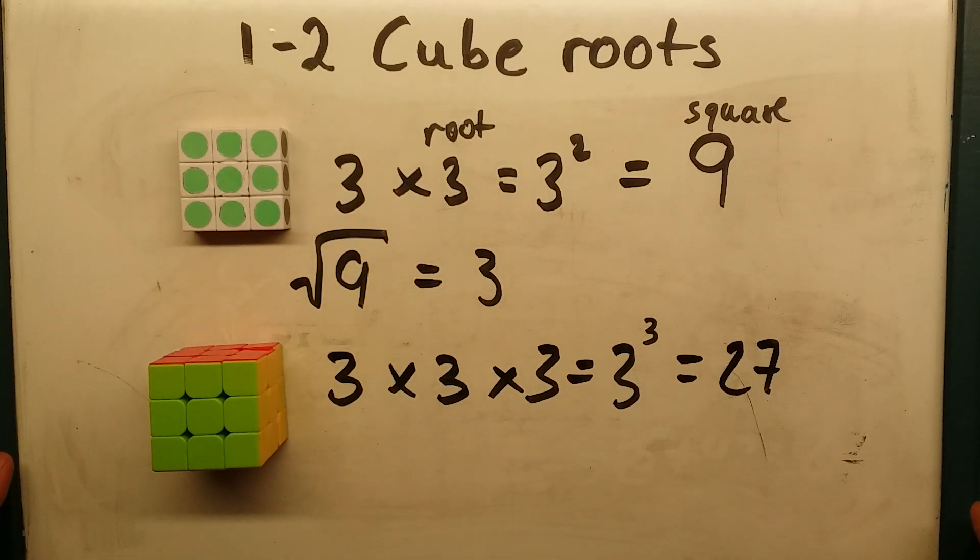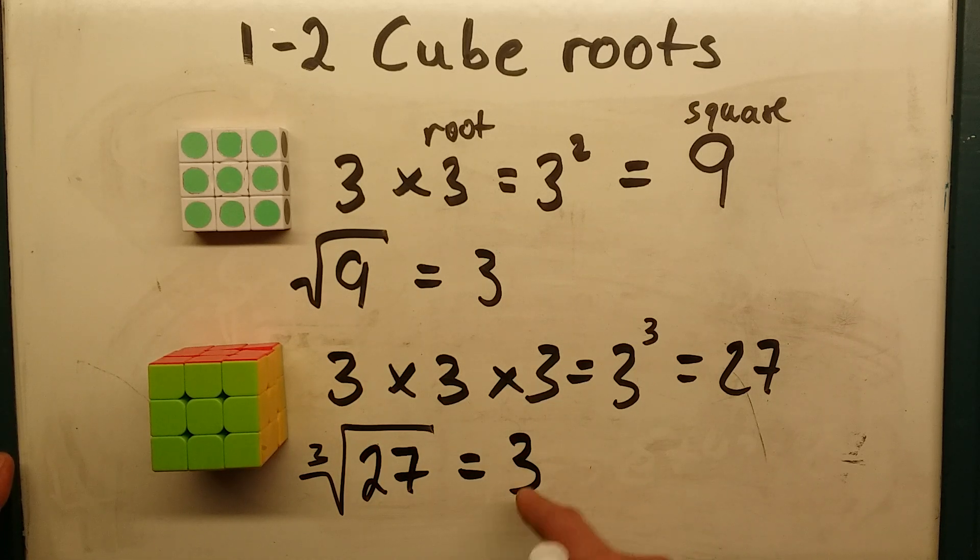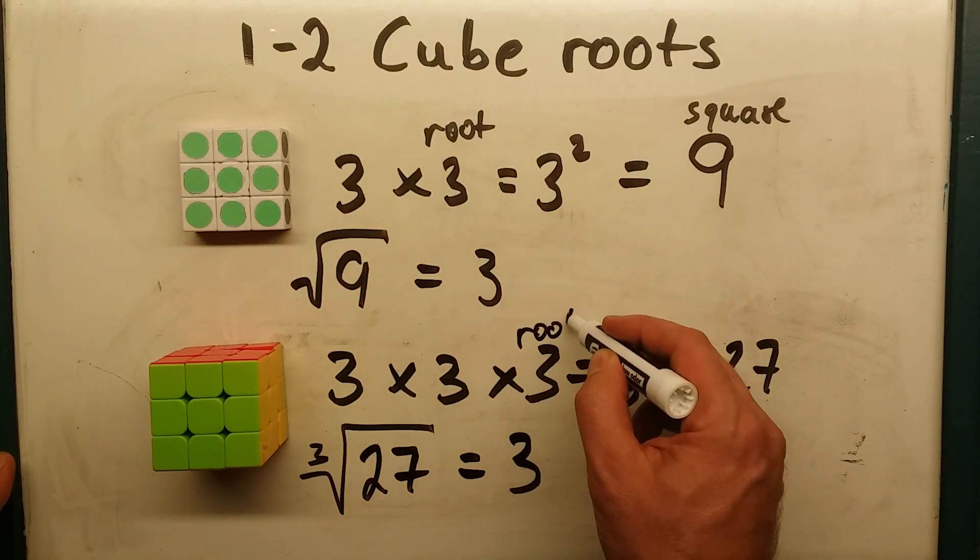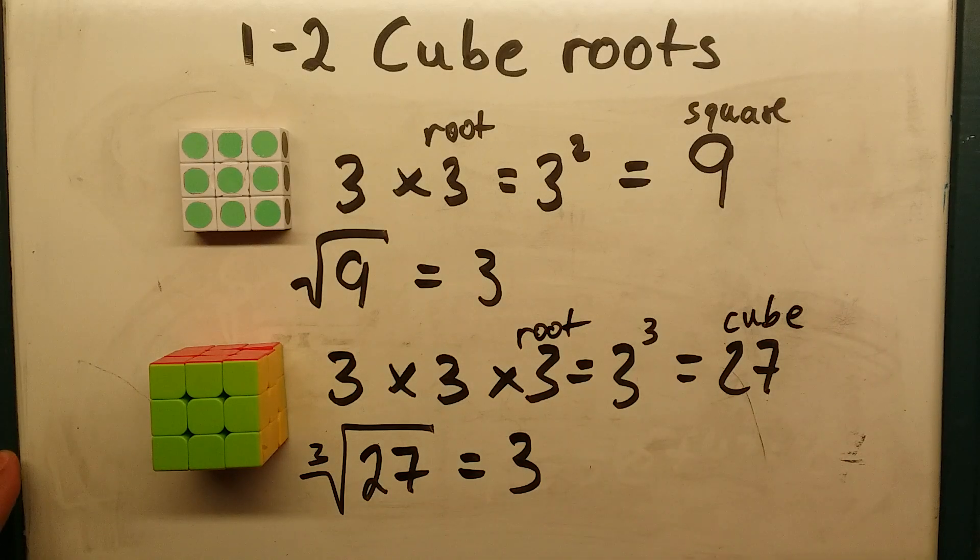So the cube root, notice different from a square root, I put a little 3 here. The cube root of 27 is 3. 3 is the root. 27 is the cube of 3.